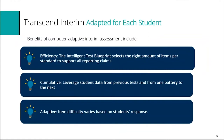When we talk about computer adaptive testing, as a student progresses through the test, the items adapt based on how well they're performing. If a student answers an item correctly, the next item will be a little more difficult. If a student gets an item wrong, the next item will be a little easier. The intelligent blueprint selects the right amount of standards and items to support the measurement claims, while efficiently collecting information at the student level — meaning not all students see the same items.